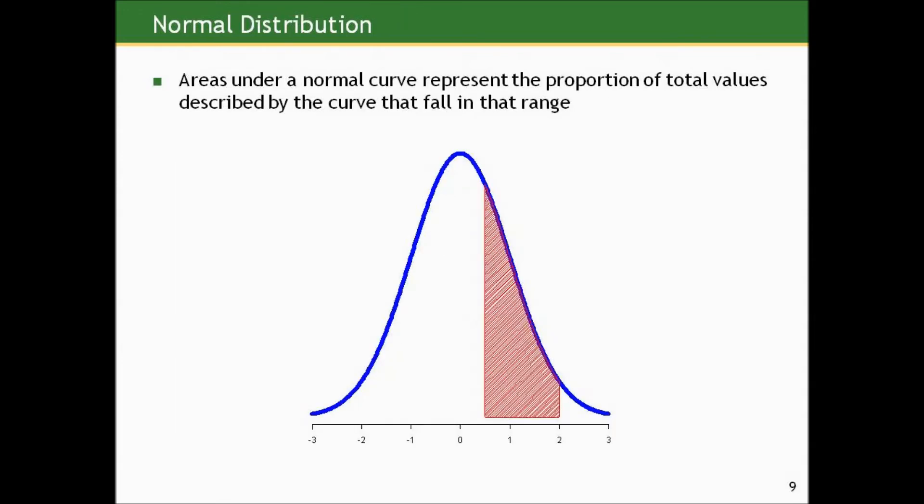When we look at this curve described by the function, areas under the normal curve represent the proportion of total values described by the curve that fall in that range. For example, this shows the plot of a normal distribution whose mean is zero, whose standard deviation is one, and the shaded area represents the proportion of values or observations between 0.5 and 2 for values that follow a normal distribution with μ of zero and σ of one.